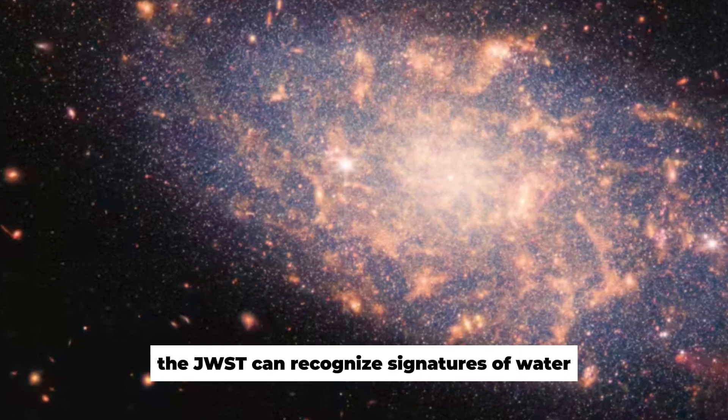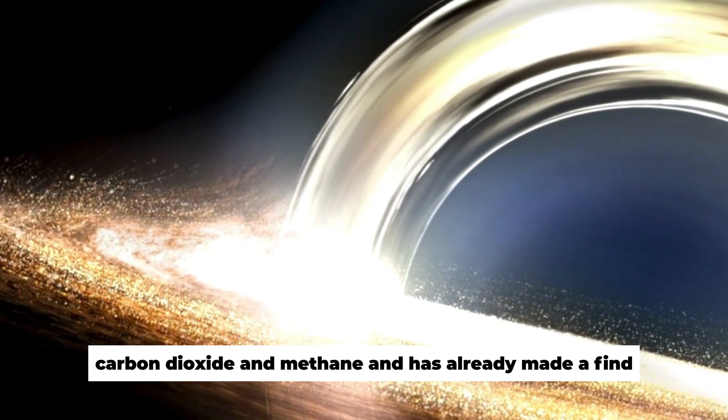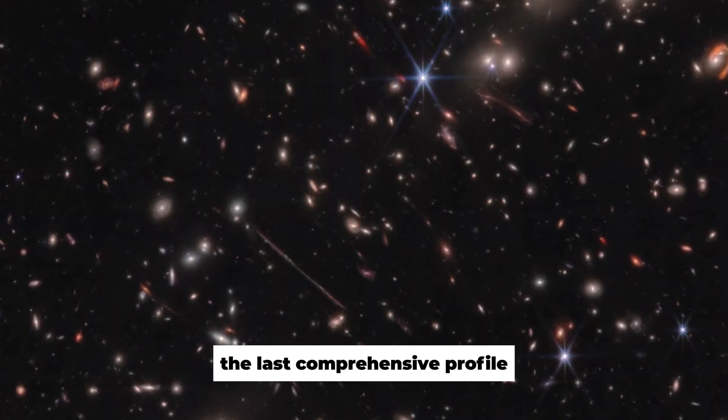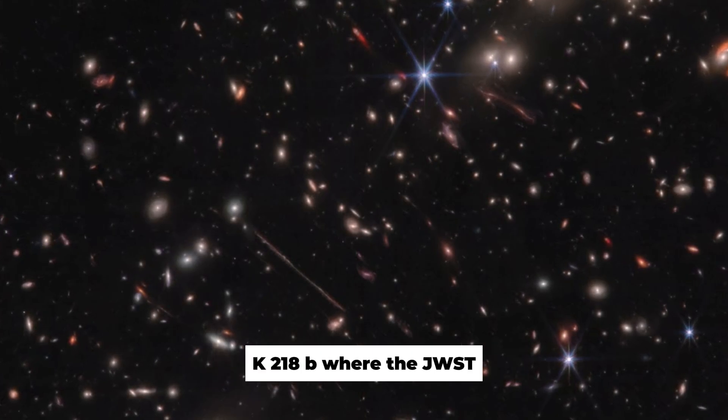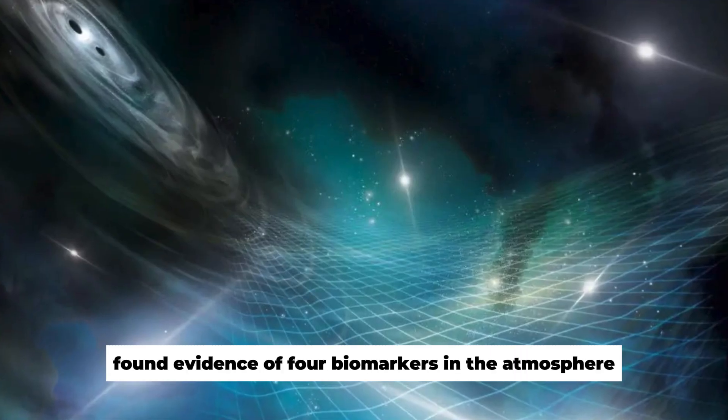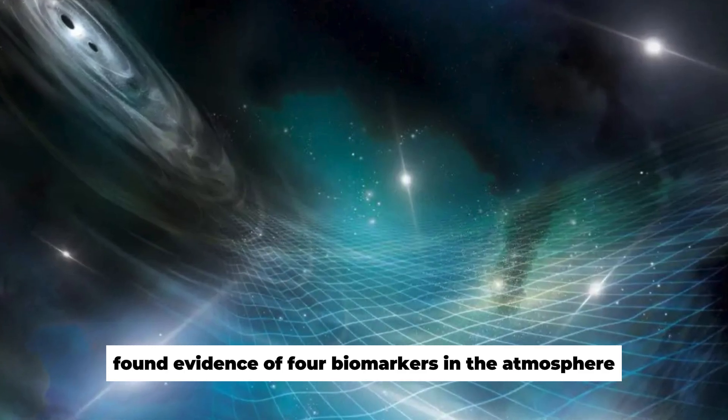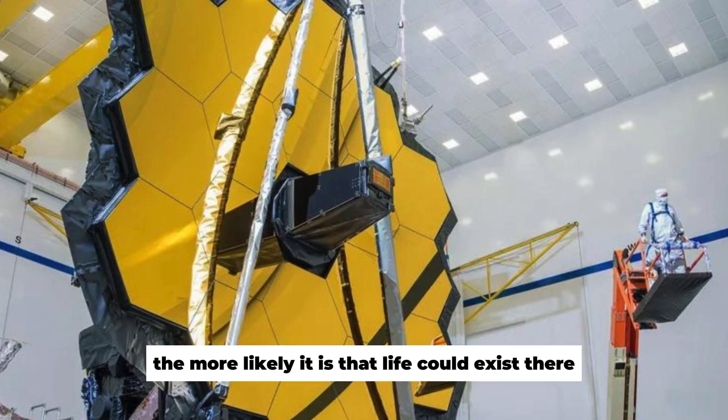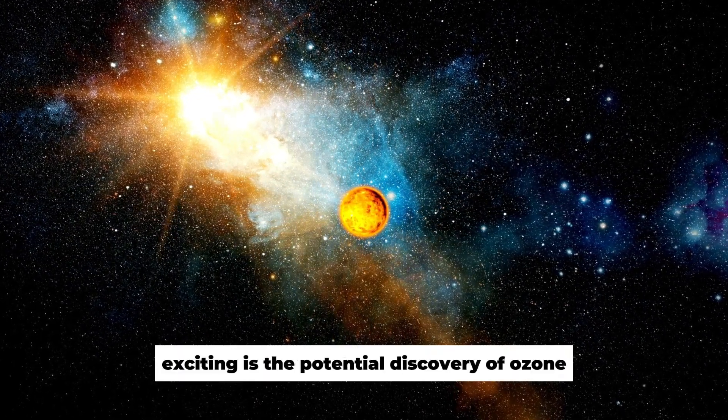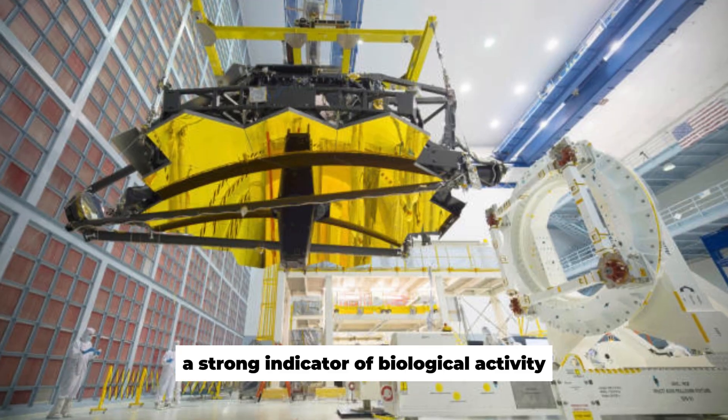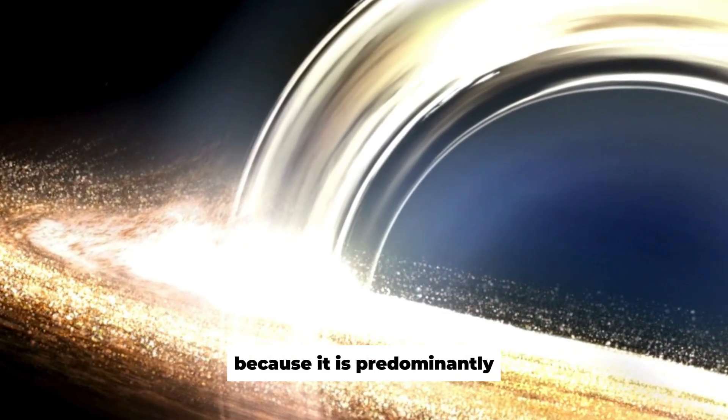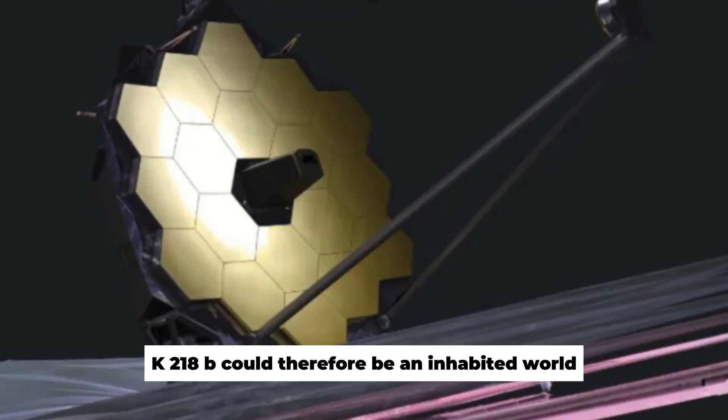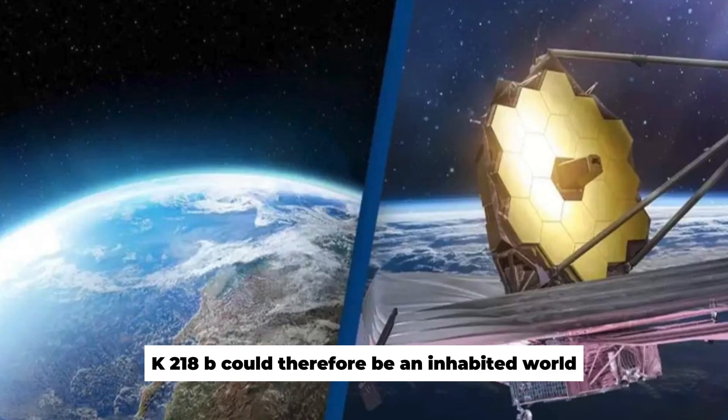The JWST can recognize signatures of water, carbon dioxide, and methane, and has already made a find. The last comprehensive profile was obtained from the exoplanet K 218b, where the JWST found evidence of four biomarkers in the atmosphere. The more such biosignatures are measured around a planet, the more likely it is that life could exist there. Particularly exciting is the potential discovery of ozone, which is considered a strong indicator of biological activity, because it is predominantly produced by biological processes in our atmosphere.